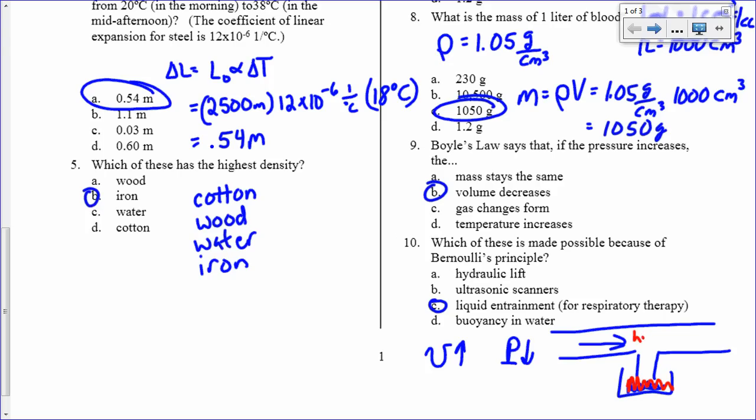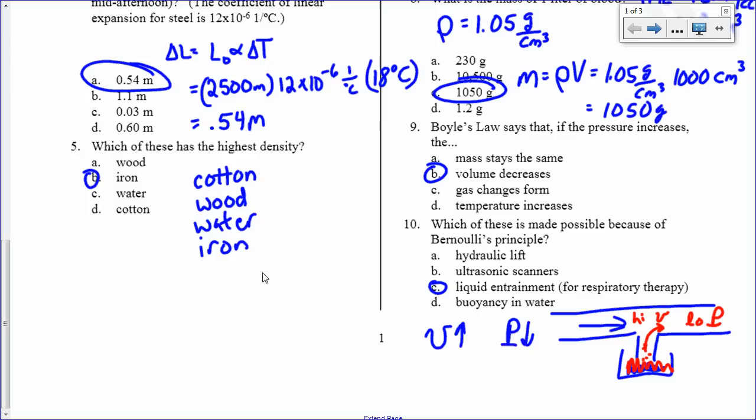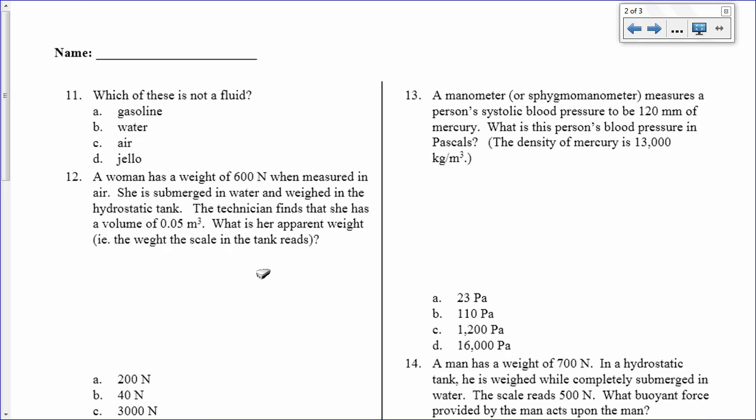And because I have high velocity here, I get low pressure. And so that brings these particles up into the flow because I have a low pressure in the tube and a high pressure outside of the tube. And that's liquid entrainment. It's a variety of purposes.